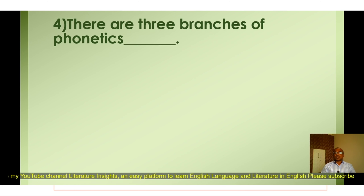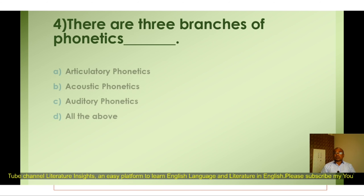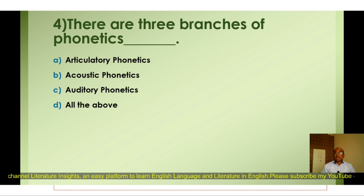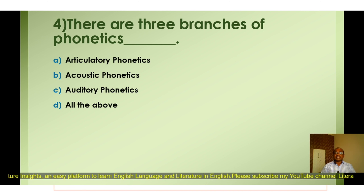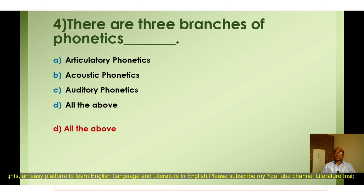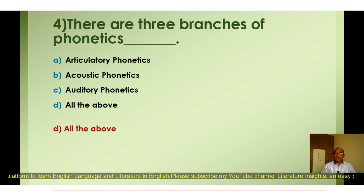Question number four: There are three branches of phonetics — what are they? A) Articulatory Phonetics, B) Acoustic Phonetics, C) Auditory Phonetics, D) All the above. The correct option is D) All the above. There are three branches of phonetics: Articulatory Phonetics, Acoustic Phonetics, and Auditory Phonetics.